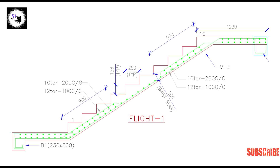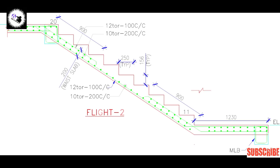The next flight is the same as flight 1. Bottom bars stop and top bars go down up to the span end.